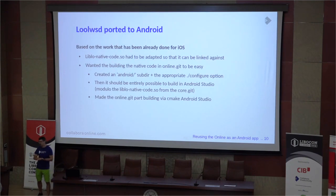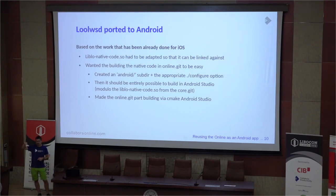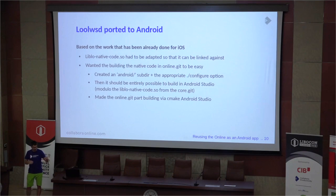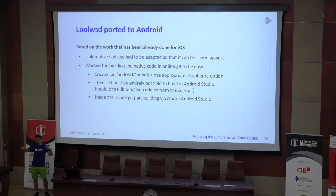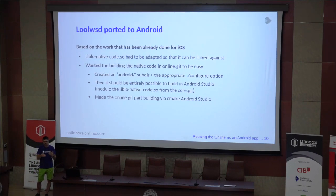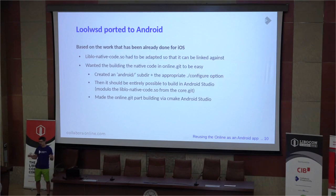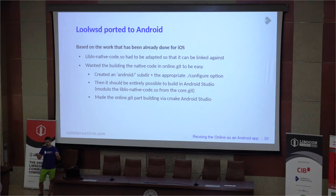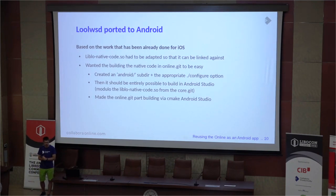I did adaptations to this code so that, in addition to creating the APK, the liplonativecode.so — which is basically all the merged code together — is produced for the task to be drawn on Android. It is essentially the entire LibreOffice Kit and all the code from LibreOffice needed for its functionality, so that it is possible to have it as a separate .so that you can link to something else. That was the first step.